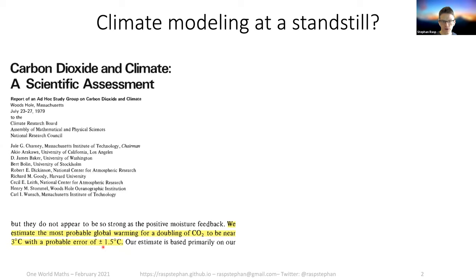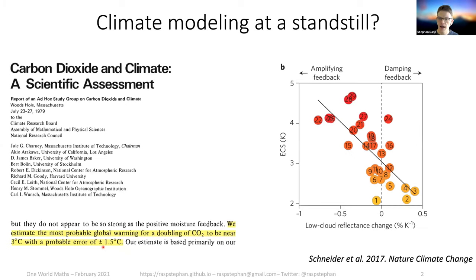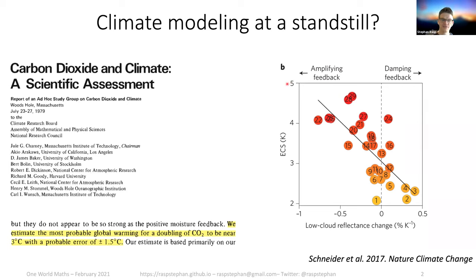Now let's fast forward 40 years and look at what this looks like currently. Each of these dots is a CMIP5 model, and the picture hasn't changed much from CMIP5 to CMIP6. The equilibrium climate sensitivity ranges from around 2 degrees to almost 5 degrees. So this 3-degree uncertainty really hasn't reduced. That's shocking because it's a quantity we really want to know — how much does our climate warm as a result of increasing greenhouse gas concentrations?